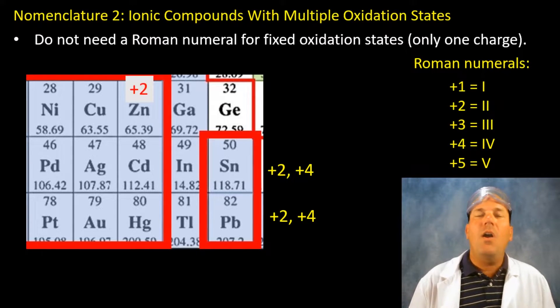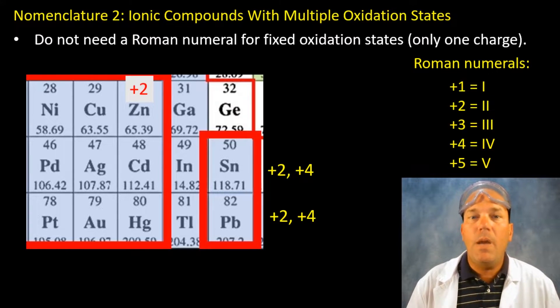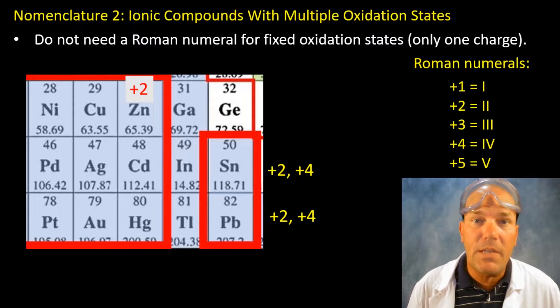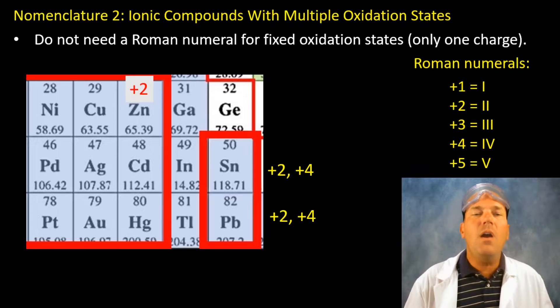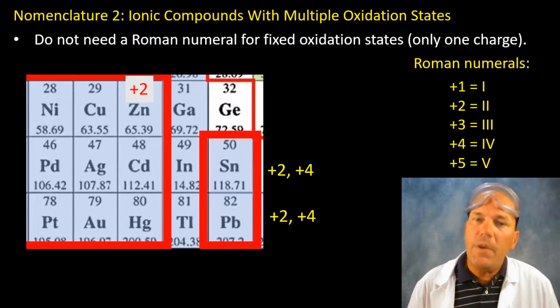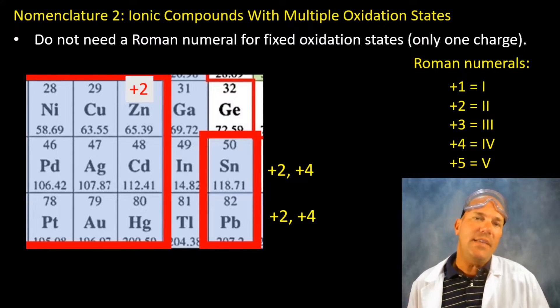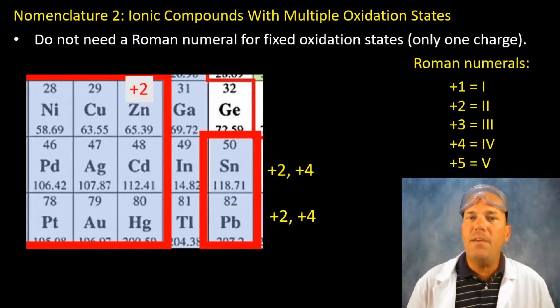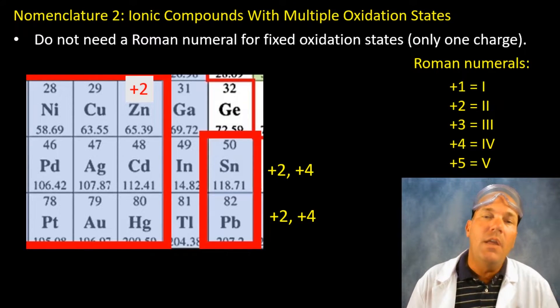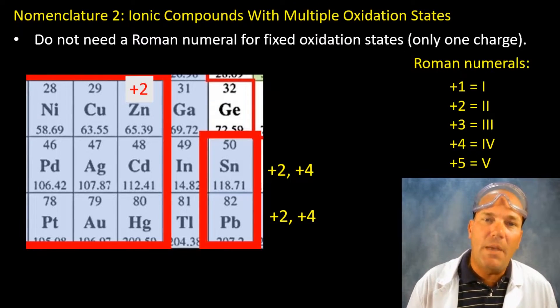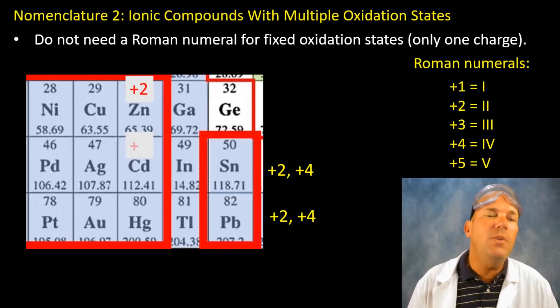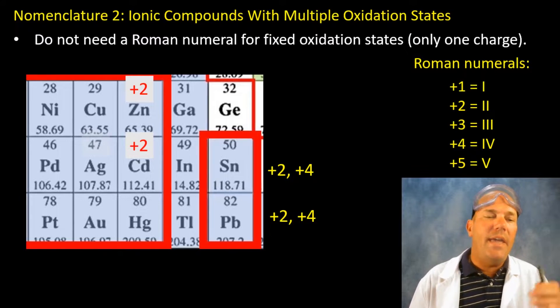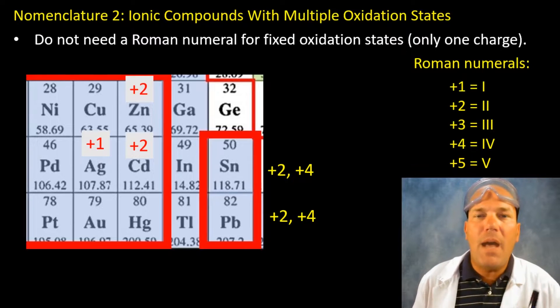Now there are exceptions. You will realize that throughout this course. I'm going to teach you about something and then I'm going to also teach you the exceptions. So there are a few transition metals that exist in nature with only one oxidation charge. I'm going to give you the three most common. Zinc exists as a positive two. Cadmium exists as a positive two. And silver exists as a positive one.